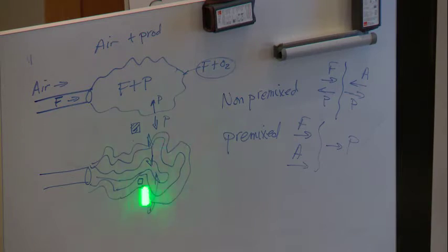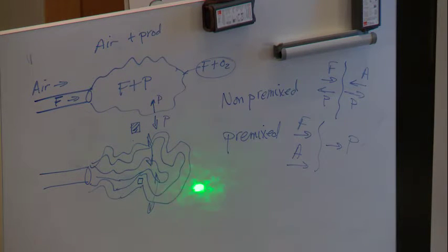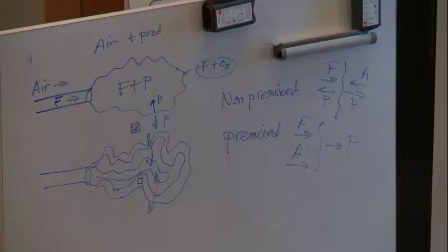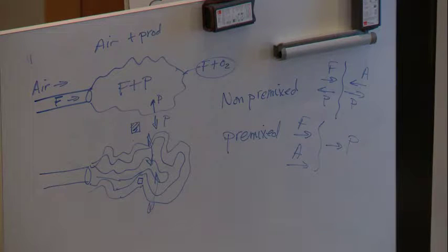If we imagine this to be oscillating in space — here are different times giving this wrinkly-looking flame — then at a given point, like in this little square I drew, at a particular time there's no blue line in that square, so there's no flame there. But at other times the flame will be in that square, so in the interrogation box sometimes you see the flame and there's chemical reaction going on, but most of the time there's no chemistry, because it's either fuel-and-products or air-and-products.